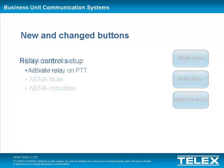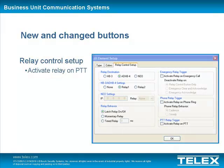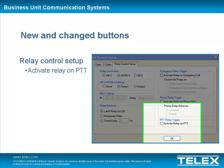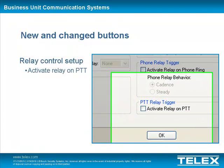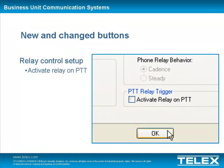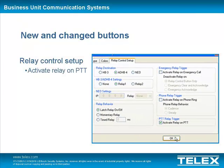An additional field was added to the Relay Control Property page. When checked, the Activate Relay on PTT will trigger the configured relay on any console-generated transmit event except for intercom and intercom per line. The relay will also be triggered whenever a phone line is taken off hook.